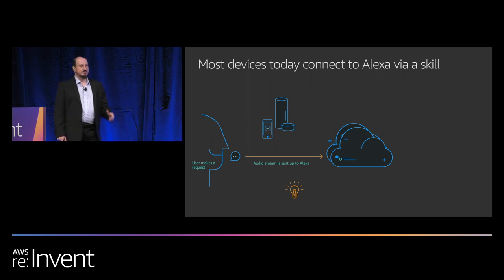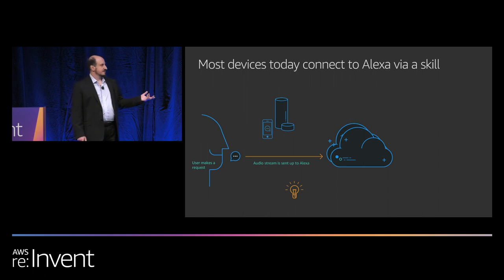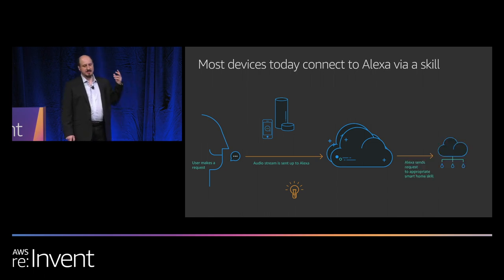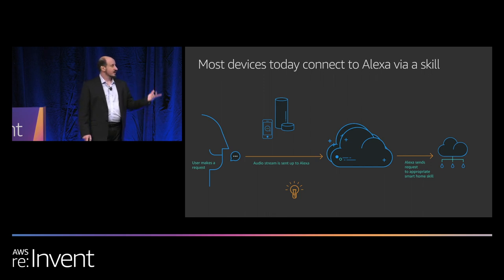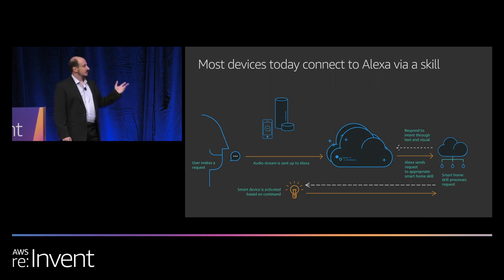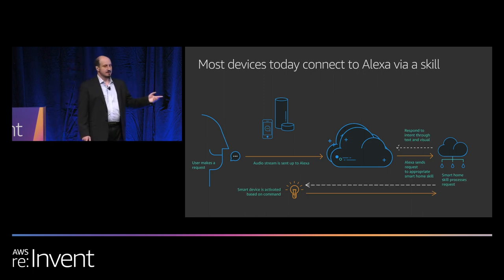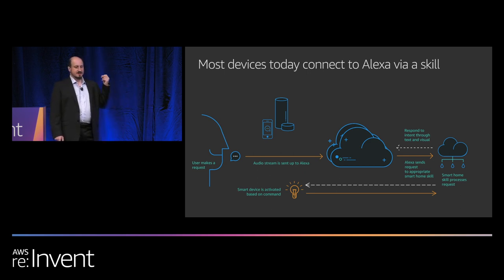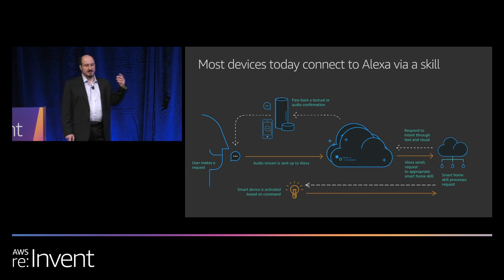The Alexa device detects the wake word and sends audio data to the Alexa service. Alexa service does natural language recognition and sends the request to the smart home service or custom service in the manufacturer's cloud. The manufacturer's cloud talks back to the smart device to turn it on, gets the confirmation back, and sends the response back to Alexa service. Finally, Alexa service sends the confirmation back to the user.